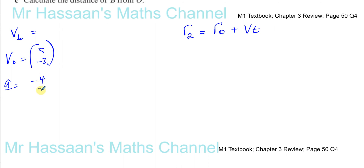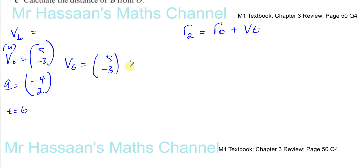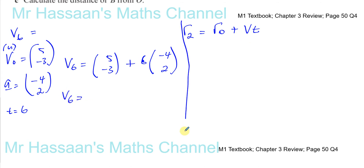The acceleration was minus 4 and 2. The velocity at 6 seconds — which becomes the constant velocity once the force is removed — is the initial velocity (5, minus 3) plus 6 times the acceleration (minus 4, 2). That gives: 5 minus 24 = minus 19, and minus 3 plus 12 = 9. So the velocity at 6 seconds is (minus 19, 9), i.e., minus 19i plus 9j. This is the constant velocity P now moves with after the force is removed.